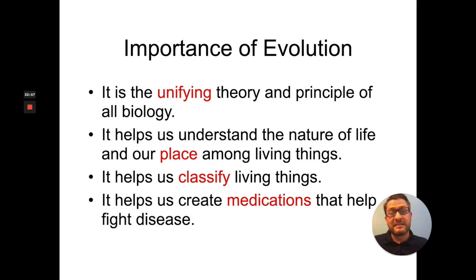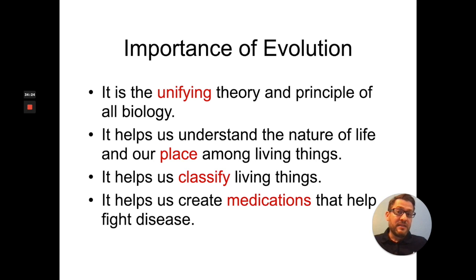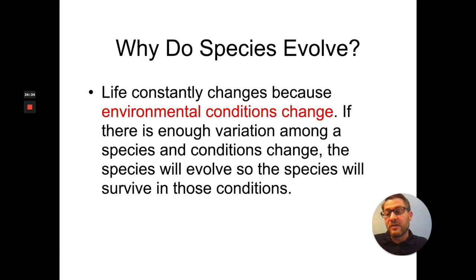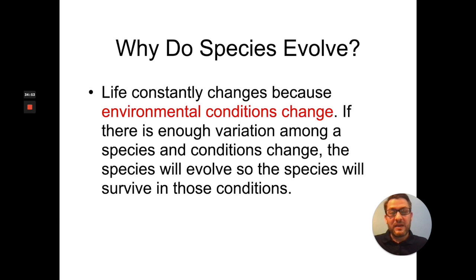A lot of the medications we use today are designed and tested on other animals. The reason this works is because these animals have an evolutionary connection to us — a lot of their physiology and anatomy is similar to ours. So if a medication works on a test subject like a rat, there's a high probability it will work on a human. The question of why species evolve is because the earth is a constantly changing environment. Evolution doesn't have an end goal or specific purpose — it's all about allowing species to survive in the environment they're living in. As the environment changes, organisms need to evolve to meet those changes; otherwise, the other option is to go extinct.